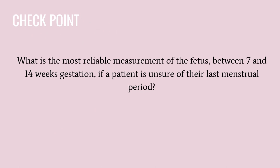Checkpoint: What is the most reliable measurement of the fetus between 7 and 14 weeks gestation if a patient is unsure of their last menstrual period? The answer is crown-rump length. This technique involves measurement of the fetal length from the tip of the cephalic pole to the tip of the caudal pole — head to tail — with the fetus at rest in its natural curvature.